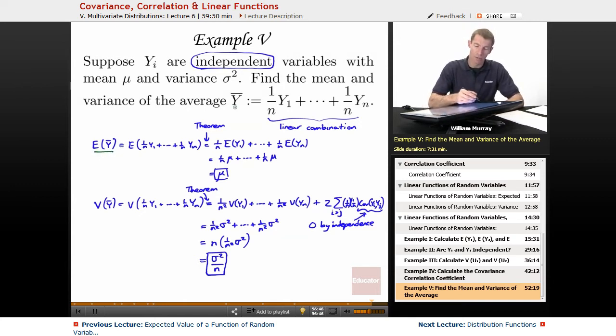I wanted to find the expected value of y bar. So remember that y bar, the average, just can be written as a linear combination of these variables. And expectation is linear. That's what we learned in that theorem. So you can just separate it out into the expected values of y1 up to yn. And just pull out the constants. And then each one of those E of yis is mu. Because we were given that in the problem right there. And so we were adding up n copies of 1 over n times mu. So at the end, we just get a whole mu.